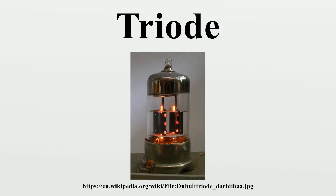Operation. In the triode, electrons are released into the tube from the metal cathode by heating it — a process called thermionic emission. The cathode is heated red-hot by a separate current flowing through a thin metal filament. In a few triodes the filament itself is the cathode, while in most the filament heats a separate cathode electrode. Virtually all the air is removed from the tube so the electrons can move freely. The negative electrons are attracted to the positively charged plate and flow through the spaces between the grid wires to it, creating a current through the tube from cathode to plate. The magnitude of this current can be controlled by a voltage applied between the cathode and the grid.